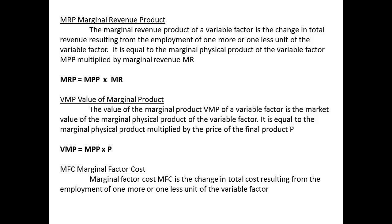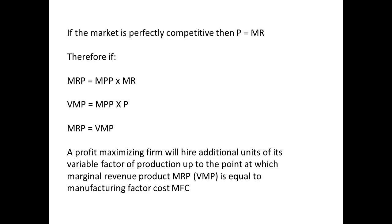The marginal factor cost, MFC, is the change in total cost resulting from the employment of one more or one less unit of the variable factor. If the market is perfectly competitive, then P equals MR. So if MRP equals MPP times MR and VMP equals MPP times P, then it follows that MRP equals VMP. A profit-maximising firm will hire additional units of its variable factor of production up to the point at which marginal revenue product, MRP, is equal to the marginal factor cost, MFC.